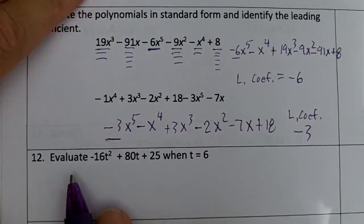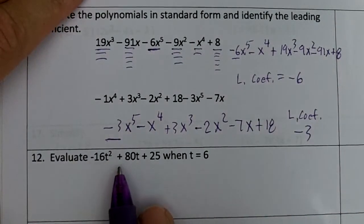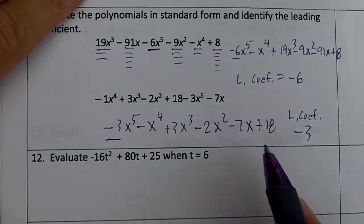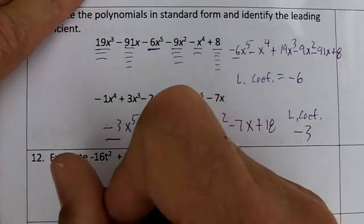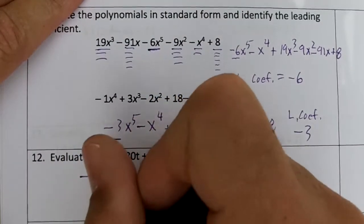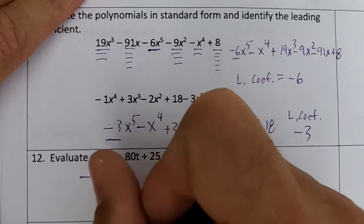And on the next one, evaluate -16t² + 80t + 25 when t = 6. Thankfully, you have a calculator. Replace the variables with parentheses and plug your number in.